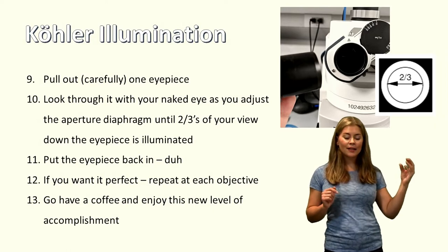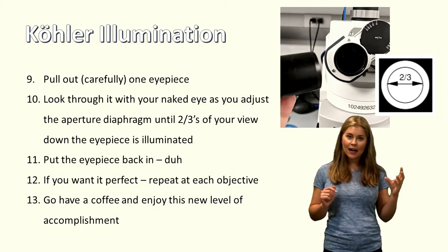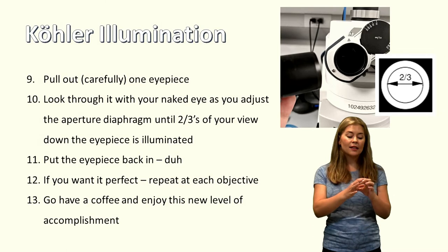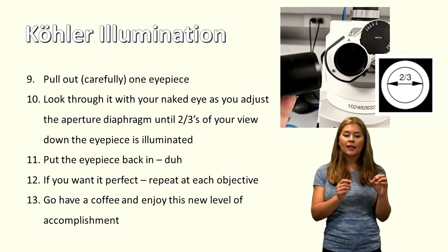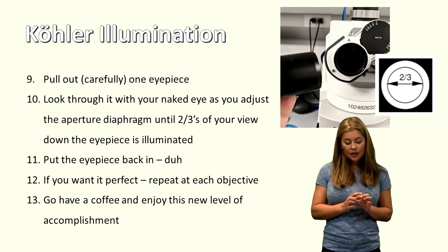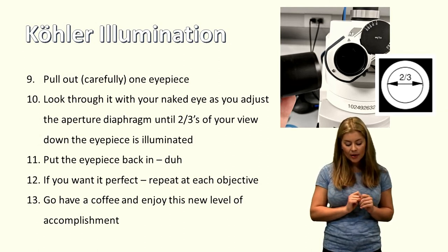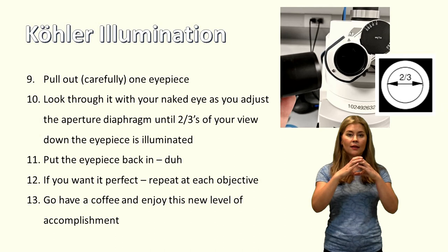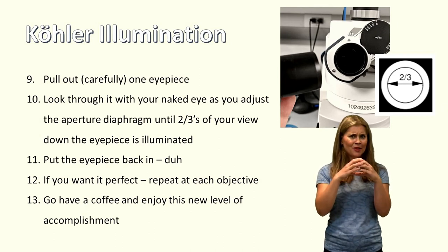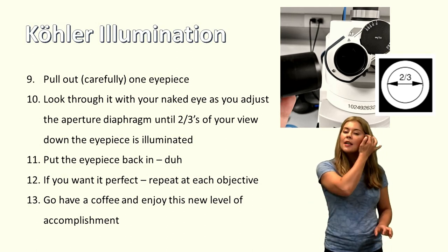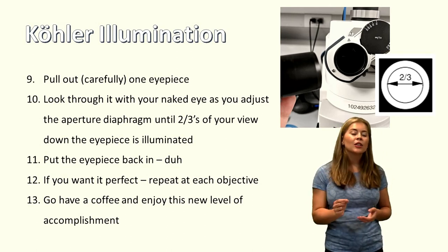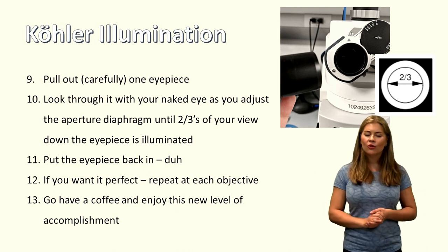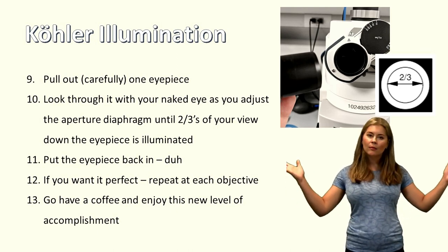Next step, you're going to pull out one of the eyepieces carefully. You're going to look through with your naked eye and you will see some light traveling to you. That light shouldn't completely fill that eyepiece. So what you want to do is adjust the aperture diaphragm until two thirds of your view down the eyepiece is illuminated. So you're going to bring it in or take it out depending on where it's sitting to reach two thirds of that view. So a white circle within a larger black circle. And then you put the eyepiece back in. Now if you do it at times ten, it'll be pretty good. If you want a really good view at a higher magnification, then you want to repeat at each objective. And then go have a coffee and enjoy this new level of accomplishment knowing that you're getting the best image available on your Axio Imager.